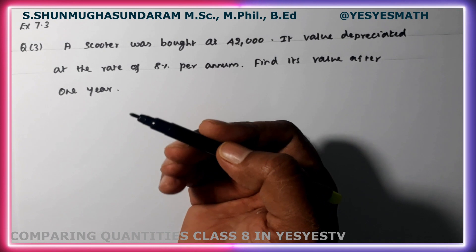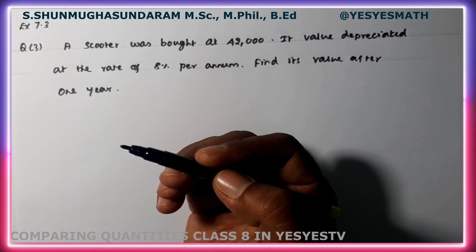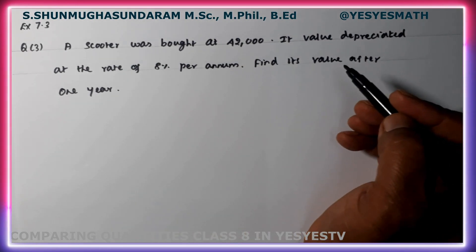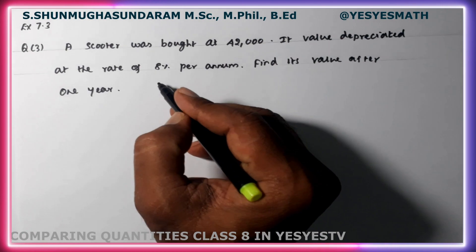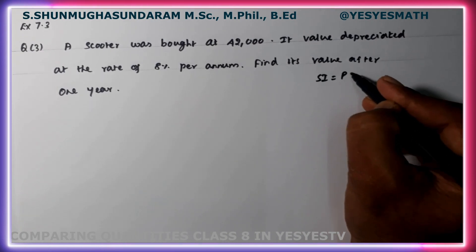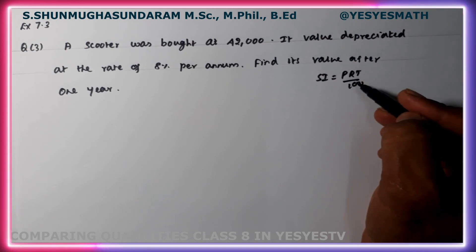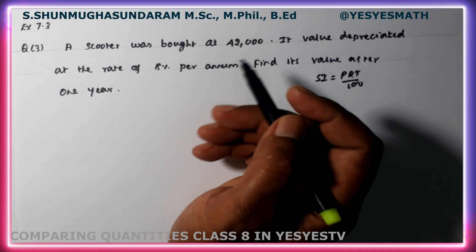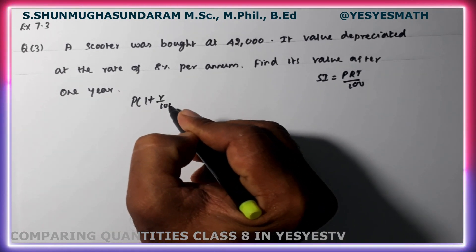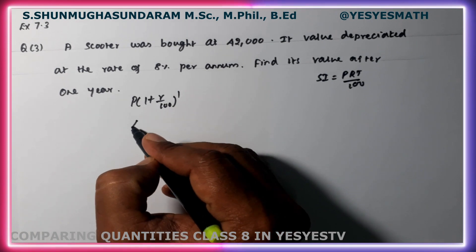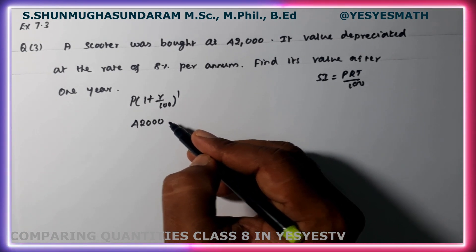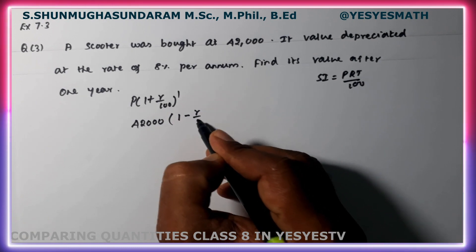When a scooter's value goes lower, the rate is lower. Find its value after 1 year. The formula is P into 1 minus r by 100 to the power 1. Here P is 42,000, so we apply 42,000 into 1 minus r by 100 to the power 1.